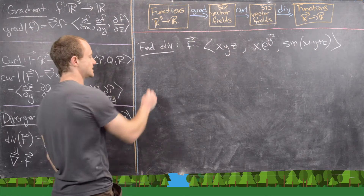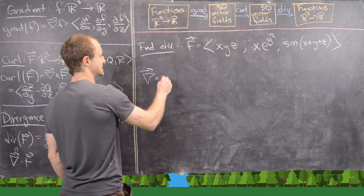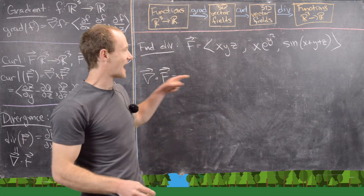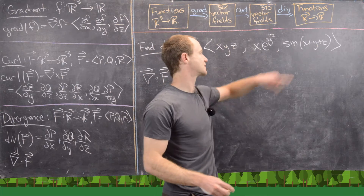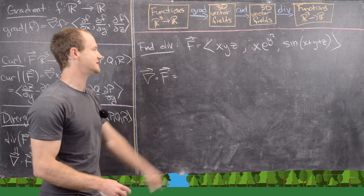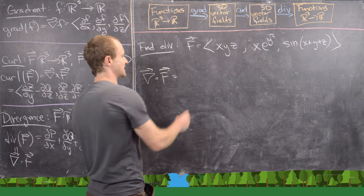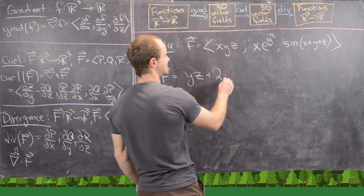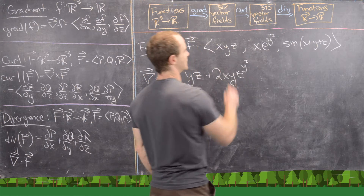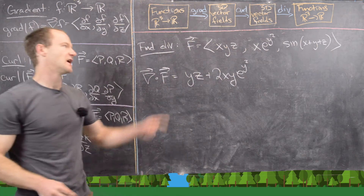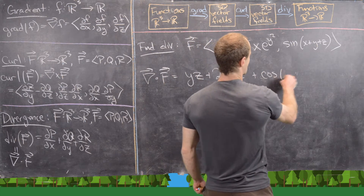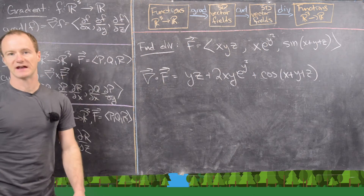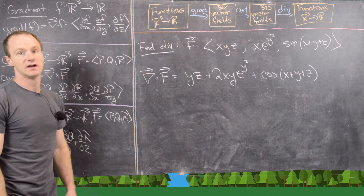Now let's find the divergence. Using del dot F, we take the partial of the first component with respect to x, add the partial of the second component with respect to y, and add the partial of the third component with respect to z. The partial with respect to y of the second term gives 2xy·e^{y²} by the chain rule, and the partial with respect to z of the last term gives cos(x + y + z). That is the divergence of this vector field.